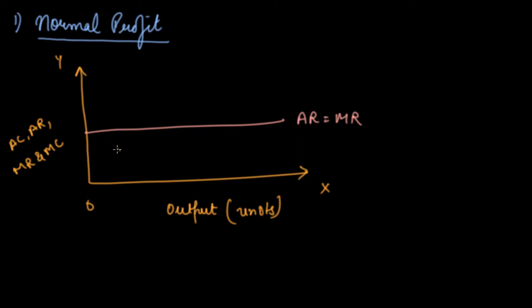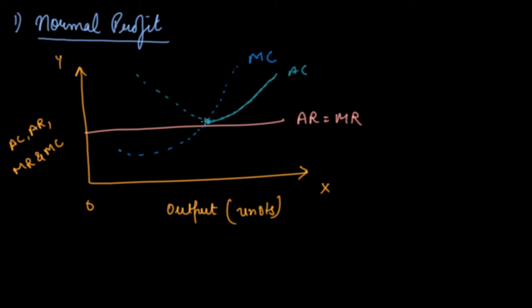We draw the MC curve, then the AC curve. Your AC falls to its lowest point and then starts rising. When your MC cuts AC, your AC is still falling. Your AC is equal to your AR — when the AR curve is tangent to the lowest point of the AC curve. At this point AC and AR are tangent, and you earn a normal profit.